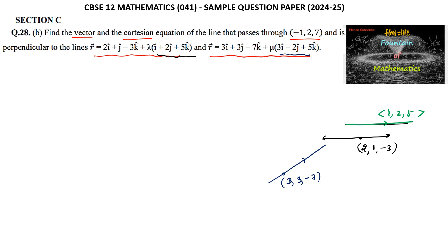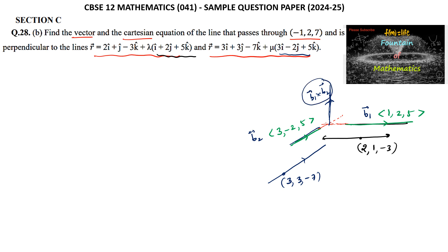That line is having the parallel vector with direction ratios 3, -2, 5. We know that there is a vector which is perpendicular to both these parallel vectors. If we consider this is B1 vector and this is B2 vector, then B1 cross B2 will be the perpendicular to both the vectors — that is, perpendicular to both the given lines.